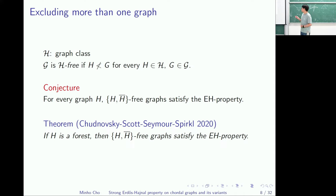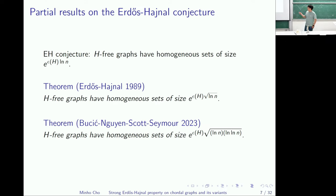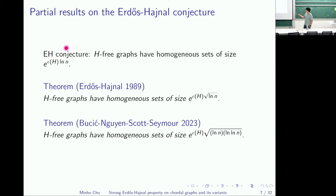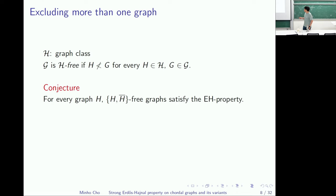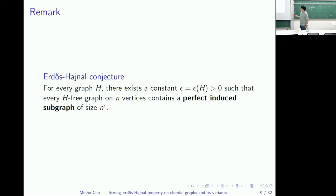One remark: taking logarithms, the Erdős-Hajnal conjecture has the formulation e to some constant times log n. If you don't mind too much about the optimal constant, it suffices to prove the conjecture by finding a polynomial-size perfect induced subgraph, since perfect graphs on n vertices contain homogeneous sets of size square root of n.